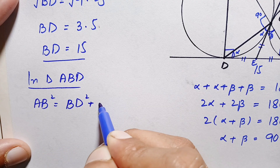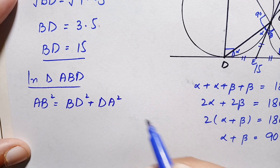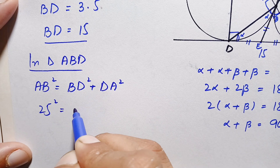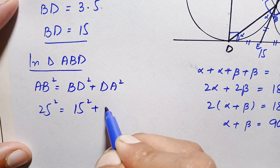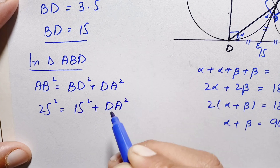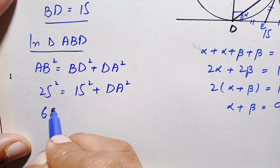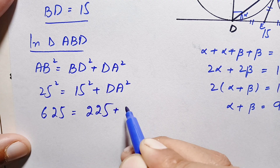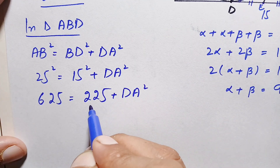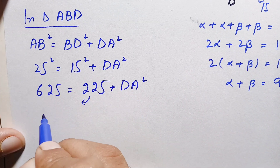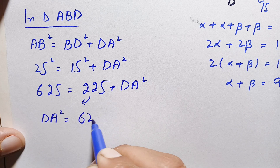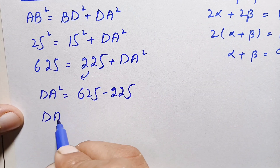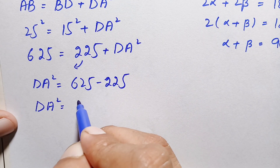Substituting the values: AB is the hypotenuse = 25 (since BC + BA = 9 + 16 = 25), and BD = 15. So 25² = 15² + DA². This gives 625 = 225 + DA². Taking 225 to the left-hand side, DA² = 625 − 225 = 400.